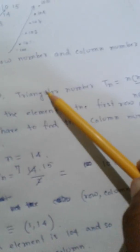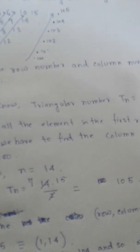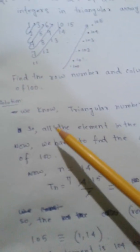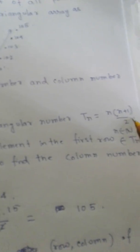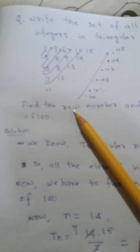First, we know the triangular number T(n) equals n(n+1)/2, where n belongs to natural numbers. This is the first row, this is the second row, this is the third row, this is the fourth row, and so on. All the elements in each row belong to T(n), that is n(n+1)/2.